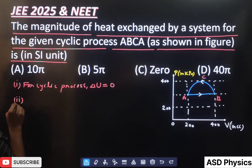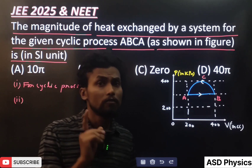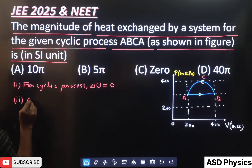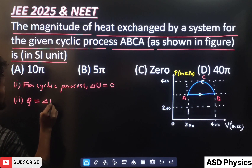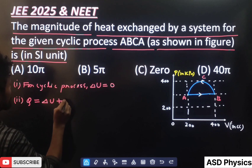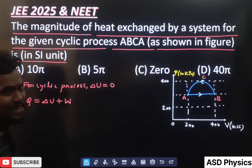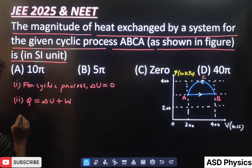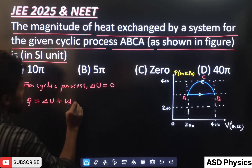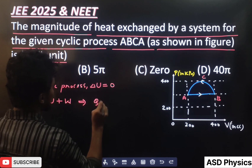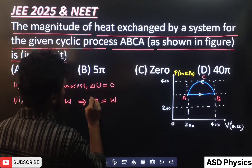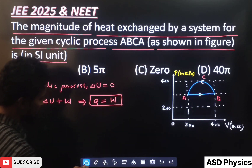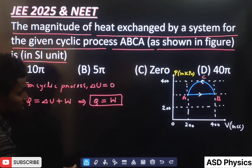Second, they are asking about heat exchange. For that we should know the first law of thermodynamics: Q equals delta U plus W. Since delta U is zero, we can say Q is equal to W. That means to find the heat exchange, we just need to calculate the work done.